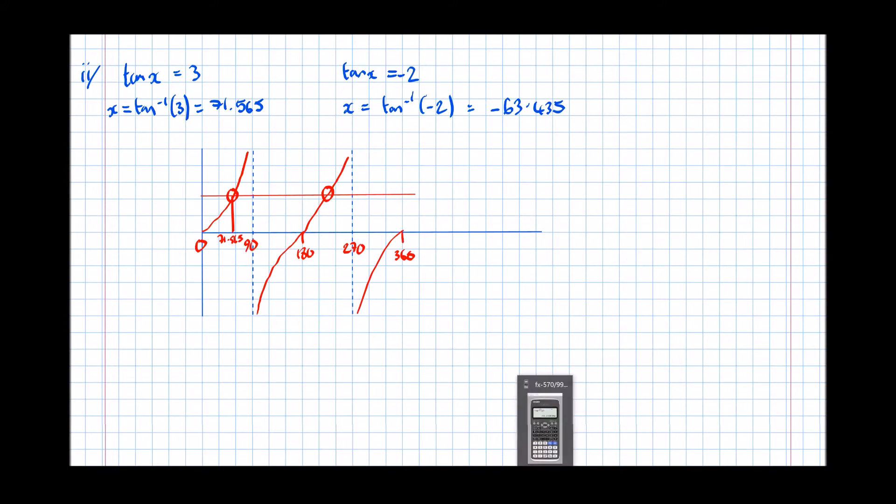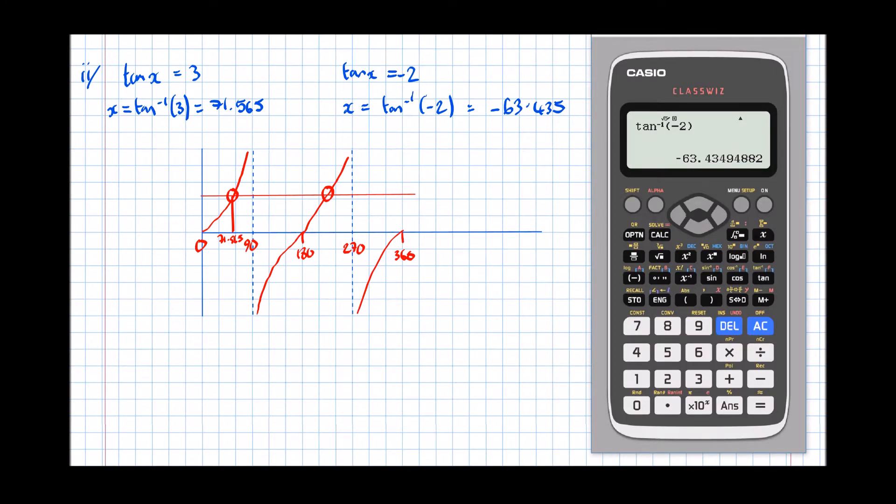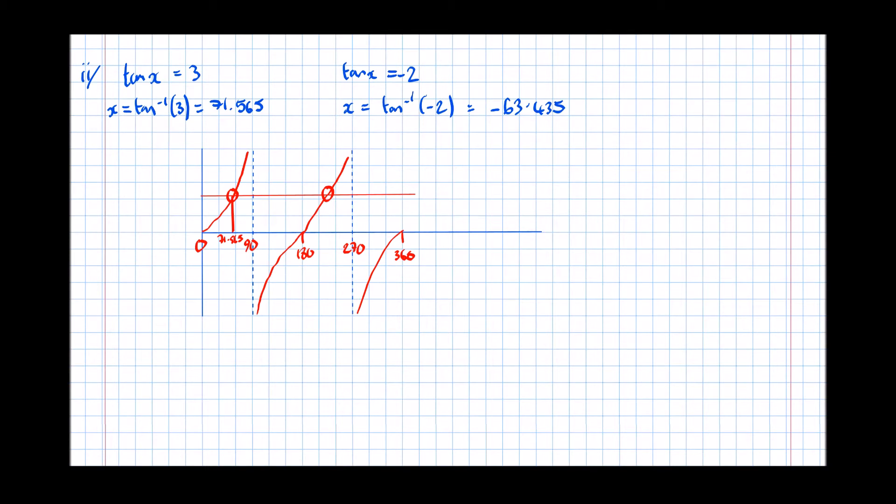So the next one is 180 more than that. The cycle on the graph, the period, is 180. So 71.565 add 180 equals 251.565.